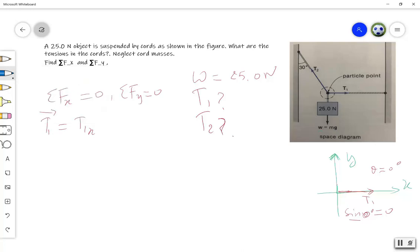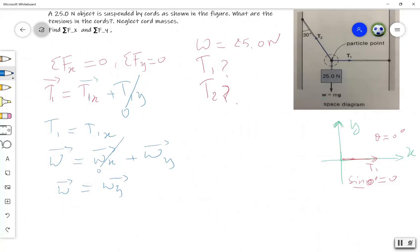Let's start with T1. T1 equals T1X plus T1Y. It does not have components in the Y axis, so T1 equals T1X. How about W? W equals WX plus WY. As you can see, it is parallel to Y axis, then WX equals 0. So W equals WY.